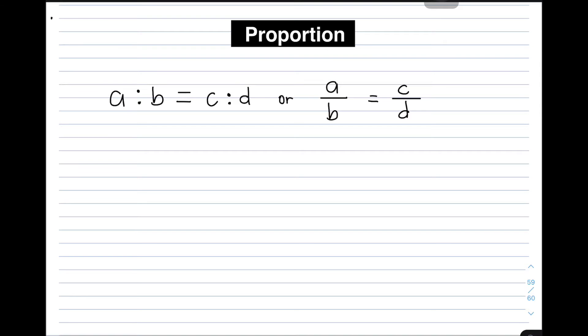Another thing you need to know about proportion is the different parts of a proportion. Let's say, for example, we have A is to B is equal to C is to D. This shows that these two ratios are equal. We have four different terms. We have the first term, which is A, second term, which is B, third term is C, and the fourth term is letter D. And you know that in proportion, we have outer terms and inner terms. These inner terms are the means, and these outer terms, A and D, are the extremes.